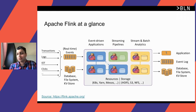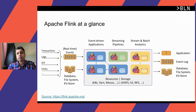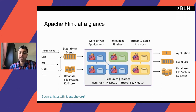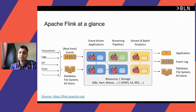Apache Flink is an extremely popular stream processing framework that lets you perform computational tasks on bounded and unbounded streams of data. It comes with a wide variety of input and output connectors, features a rich API, and includes state management, making it a great fit for building event-driven applications, streaming ETL, and analytics.